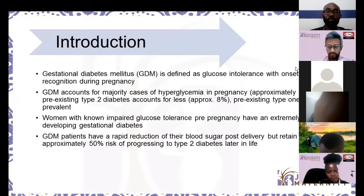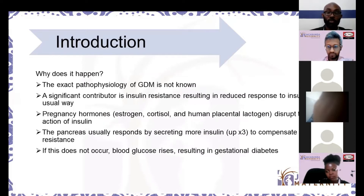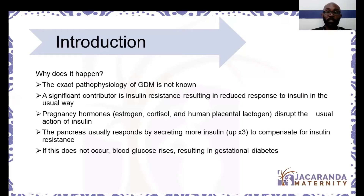Women with impaired glucose tolerance before pregnancy — those who are pre-diabetic — have a very high risk of developing gestational diabetes once they fall pregnant. However, gestational diabetes, and this is why it's distinguished from diabetes in pregnancy, tends to have a rapid reduction of blood sugar after pregnancy ends.